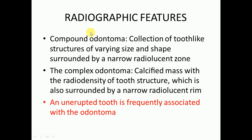Regarding radiographic features, they are divided into compound and complex. For compound odontomas, there is a collection of tooth-like structures of varying size and shape surrounded by a narrow radiolucent zone. Complex odontomas consist of a calcified mass with a radio density of tooth structure, also surrounded by a narrow radiolucent rim.